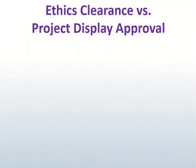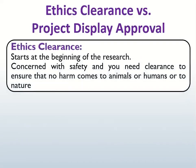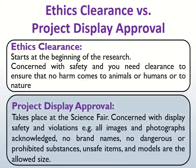Sometimes there is confusion between ethics clearance and project display approval. Ethics clearance happens before you start your project, whereas project display approval takes place at the science fair. Ethics clearance ensures that no humans or animals will be harmed and there is no damage or alteration to nature. You will be advised whether your research must be conducted under the supervision of a qualified scientist at a recognized research institute. Project display approval looks at any ethics violations in your display at the science fair.